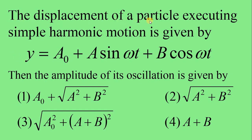The displacement of a particle executing simple harmonic motion is given by y = a₀ + a·sin(ωt) + b·cos(ωt). The amplitude of its oscillation is given by which of these options? Here, a₀, a, and b are constants. Omega (ω) is also a constant called the angular frequency of the simple harmonic motion. t is the time instant and y is the displacement of the particle from the mean position.